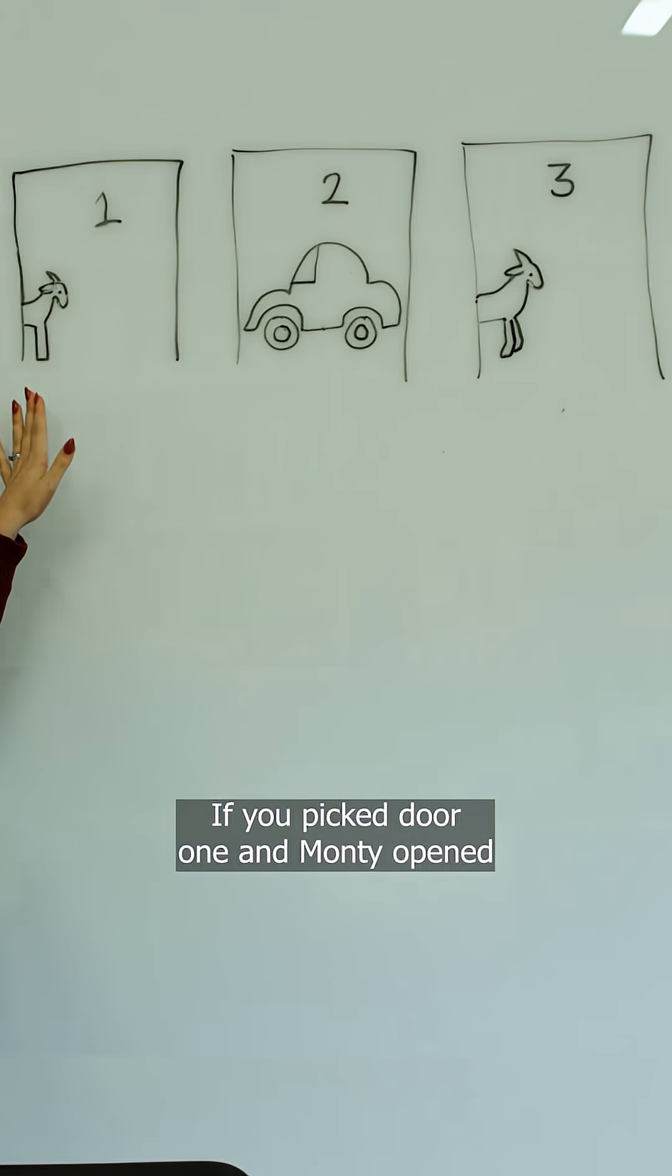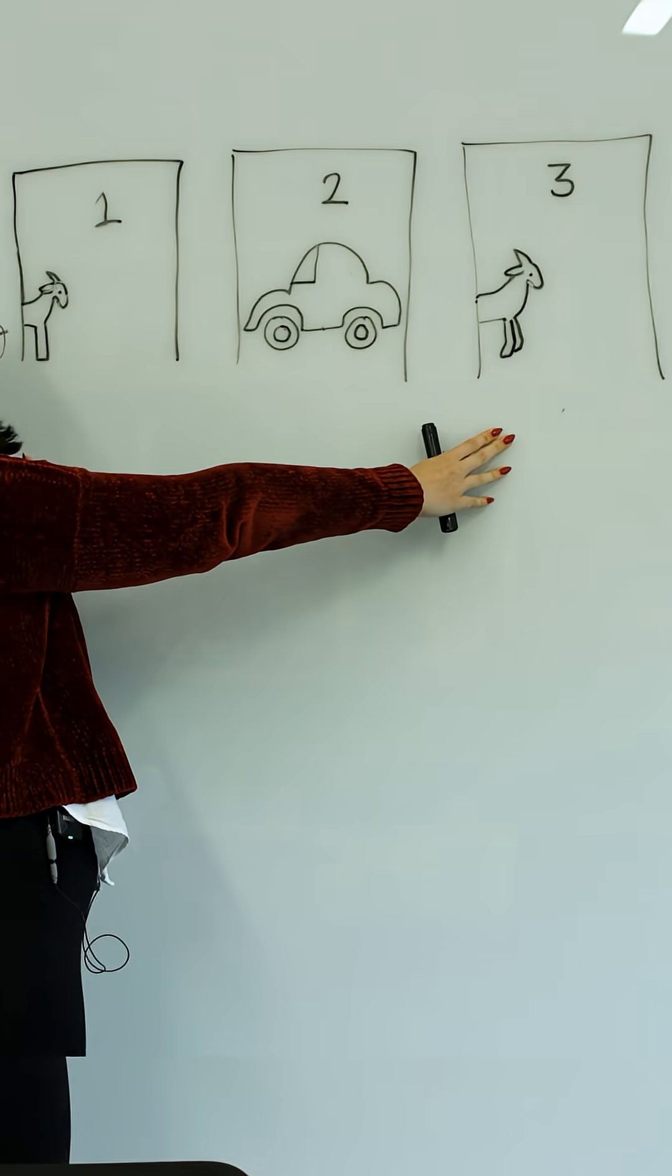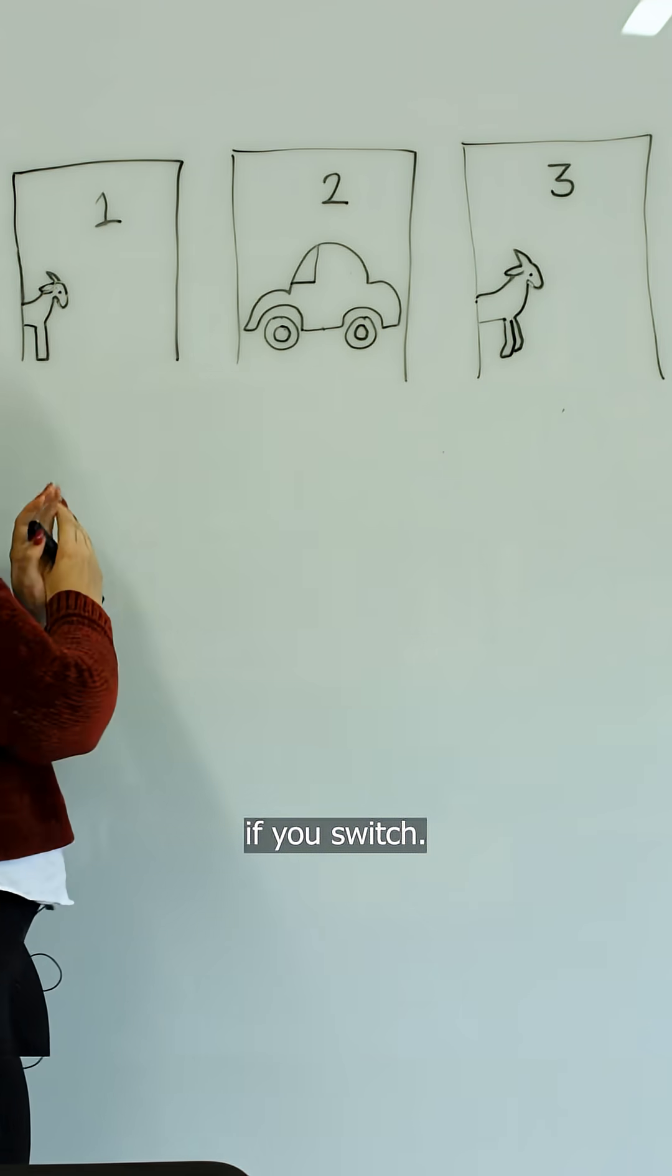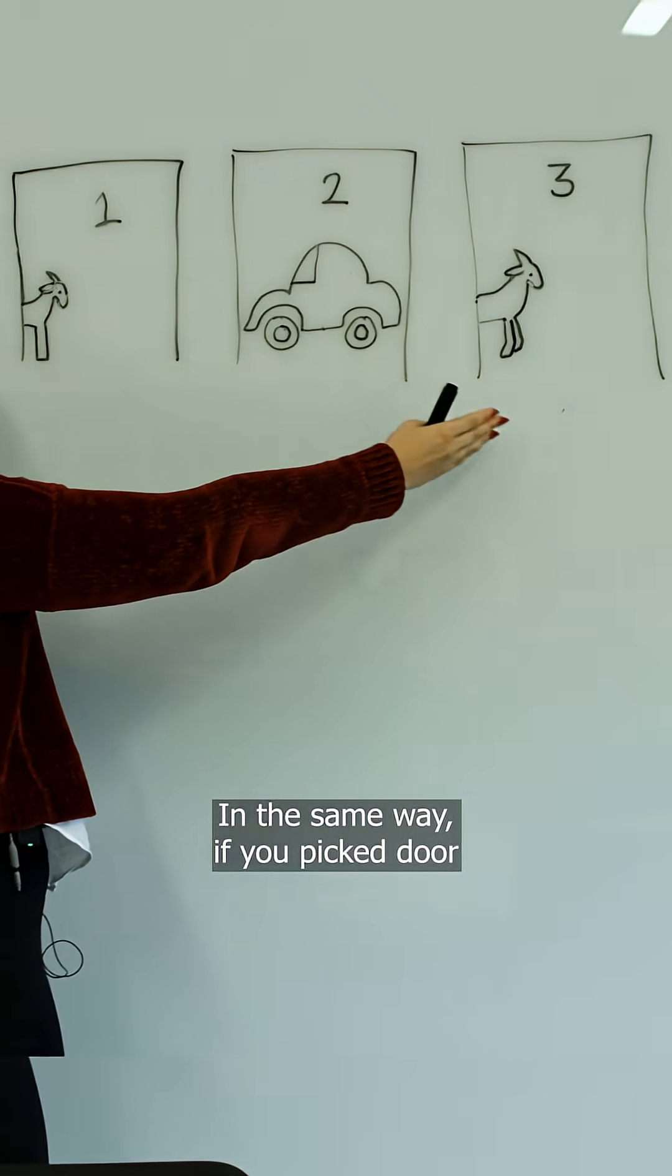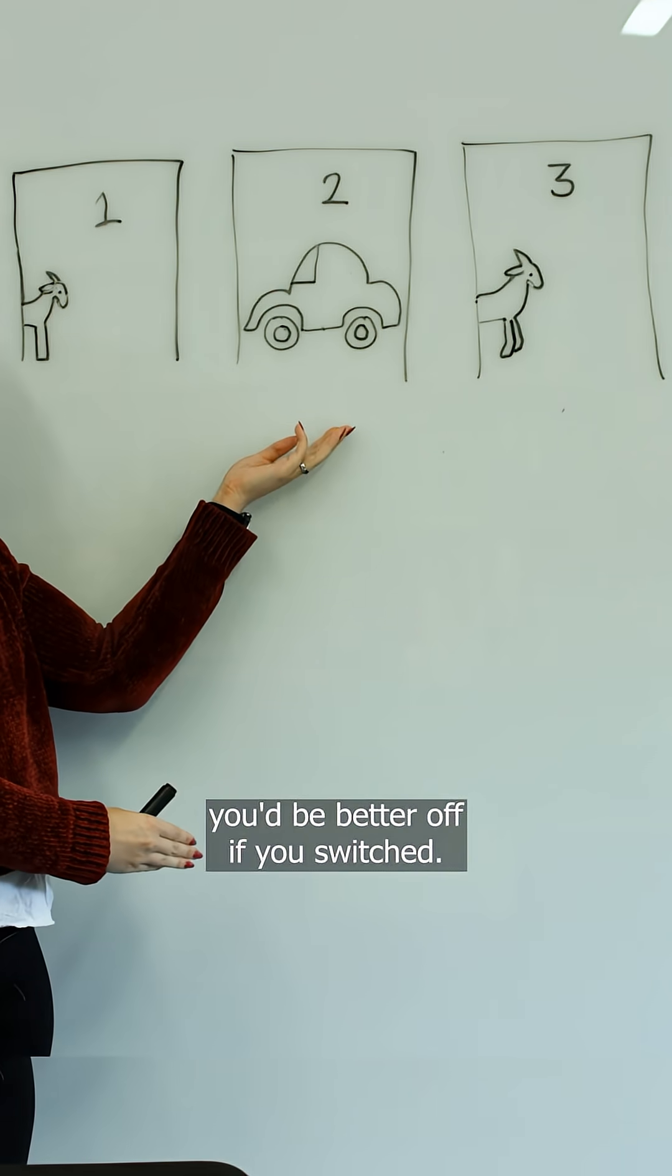If you picked door one and Monty opened door three, you're going to be better off if you switch. In the same way, if you picked door three, Monty would have to open door one. And again, you'd be better off if you switched.